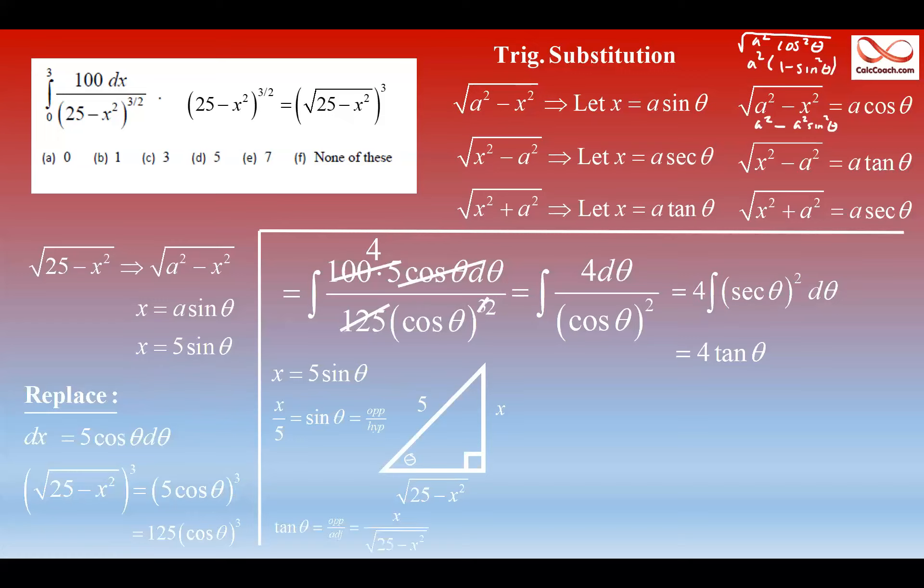It's our job to replace tan theta, who's opposite over adjacent, so x on top of radical 25 minus x squared, will be the replacement to tan theta. And so, don't forget we have four times that, though. So, our antiderivative is 4x on top of radical 25 minus x squared. Our original integral is equal to that.